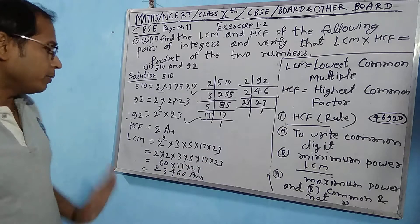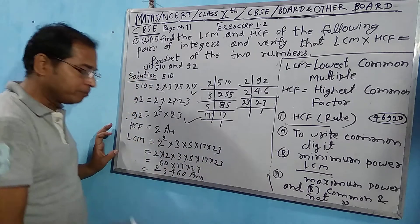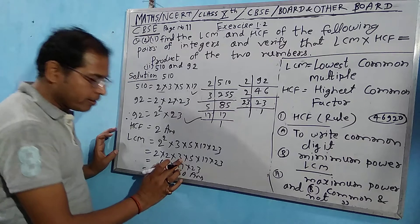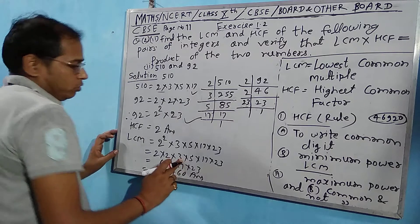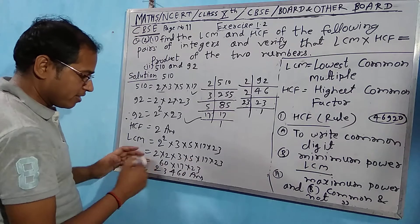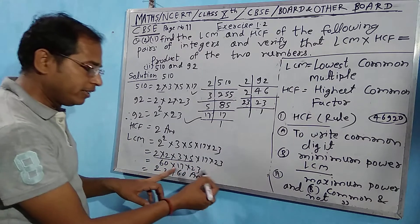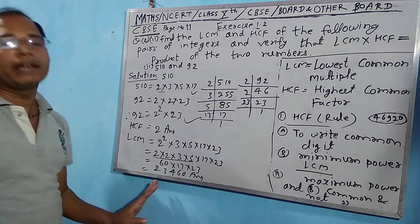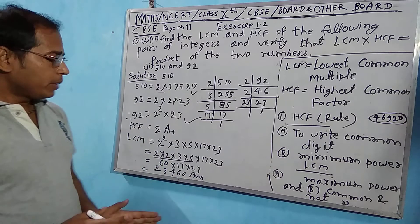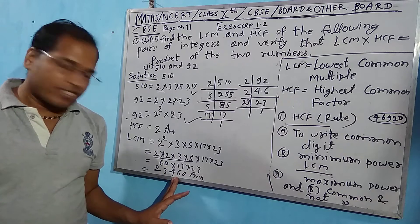So we write 2 twice (2²), then 3, 5, 17, and 23. Multiplying: 2 × 2 = 4, 4 × 3 = 12, 12 × 5 = 60. Then 60 × 17 × 23. This gives us LCM = 23,460.